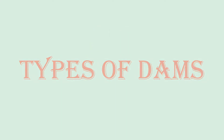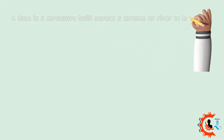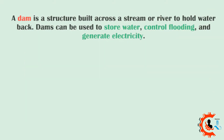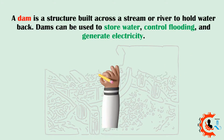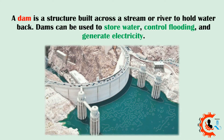Hi guys, welcome back to another video tutorial. Today we are going to be talking about types of dams. A dam is a structure built across a stream or river to hold water back. Dams can be used to store water, control flooding, and generate electricity.